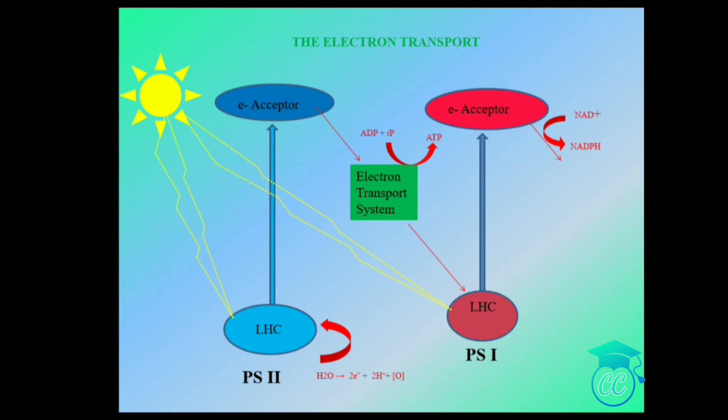The oxygen formed by splitting of water diffuses out of the chloroplast and is one of the net products of photosynthesis. The electrons move to PS2. Water splitting is associated with PS2 and is located on the inner side of the thylakoid membrane. The final output of electron transport is the formation of ATP and NADPH.